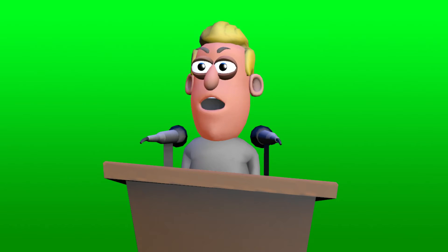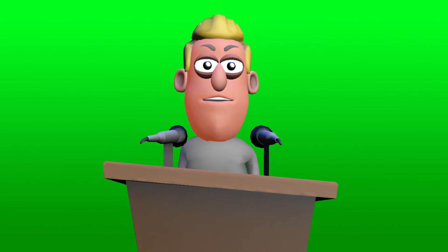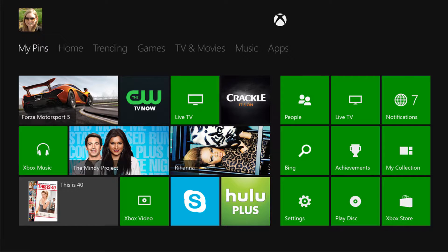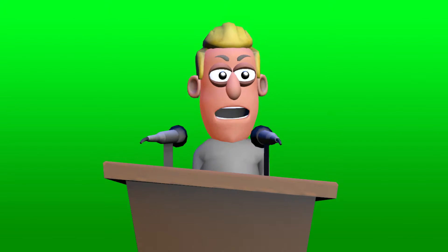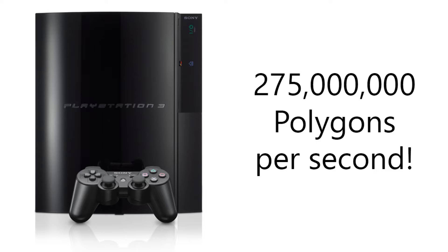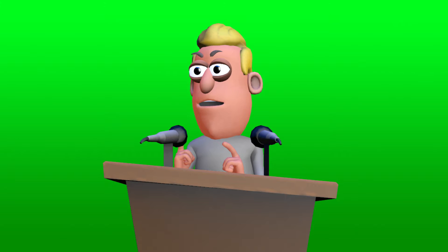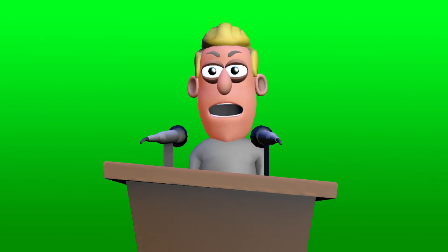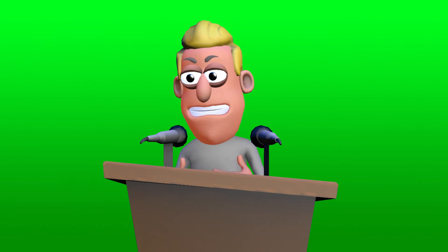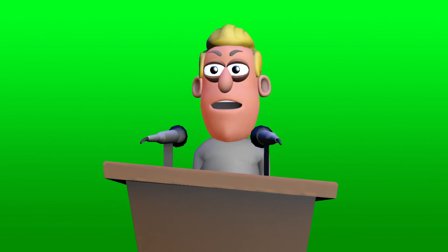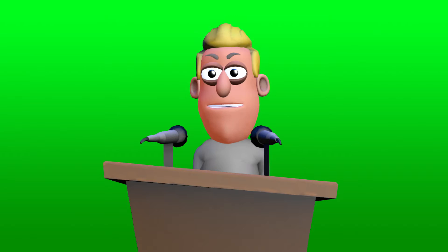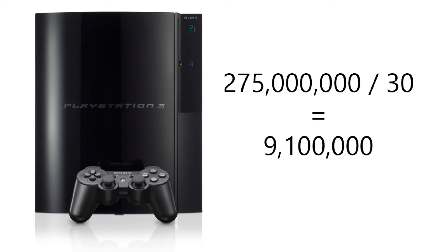If all they had to do was calculate polygons — not any of the other stuff such as textures, operating system, or gameplay elements — then the Xbox 360 could render 500 million polygons per second, and the PS3 could manage 275 million per second. That does sound like a lot, but if you then take into account that games need to render at least 30 frames every single second, then the number of polygons that can be shown drops to 16.6 million for the 360, and 9.1 million for the PS3.